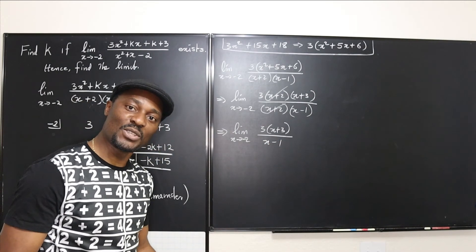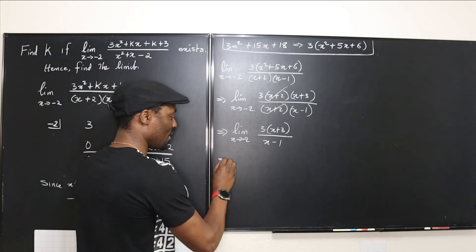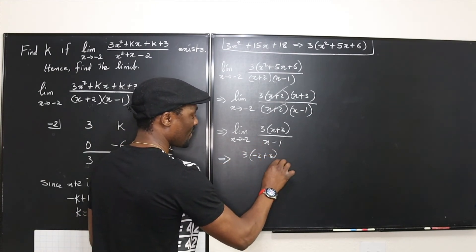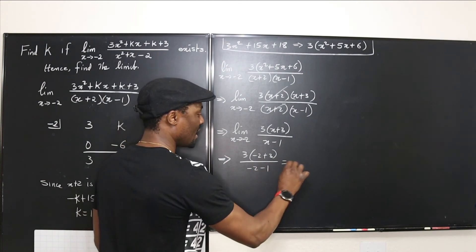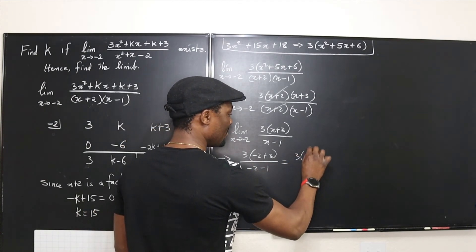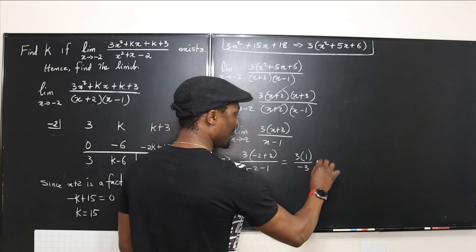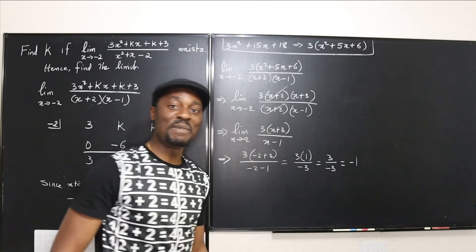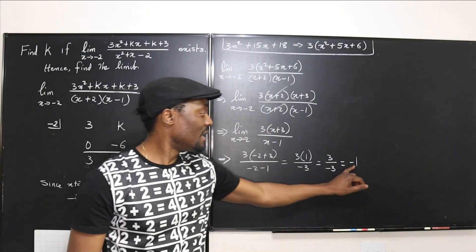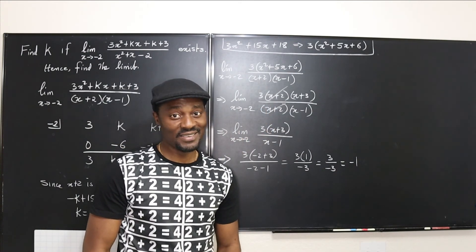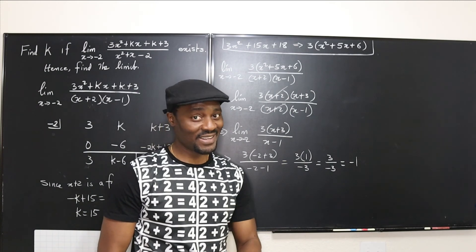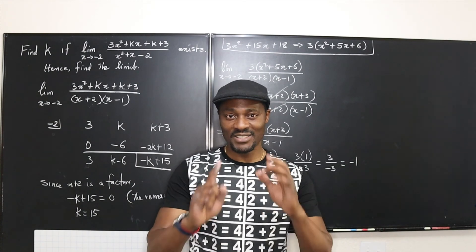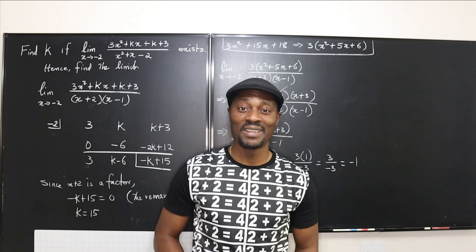Now we can use direct substitution. Substituting x = -2: 3(-2 + 3) over (-2 - 1) = 3(1) over (-3) = 3 over -3 = -1. So the limit exists and equals -1. I hope you learned something in this video — give it a thumbs up and subscribe if you haven't. Until next time, don't stop learning because those who stop learning have stopped living.